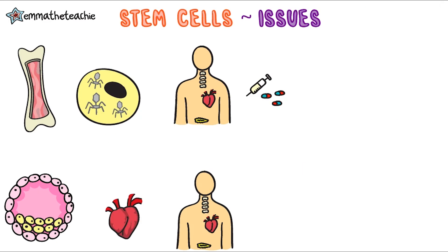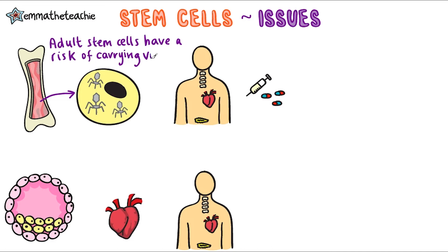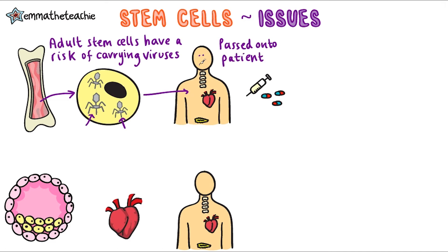Finally we need to look at the issues surrounding stem cells. Adult stem cells have a risk of carrying viruses which could infect the patient receiving them. And if a patient receives stem cells from an unrelated person there's a chance that their body will reject them — they'll have to use immunosuppressant drugs to prevent this.